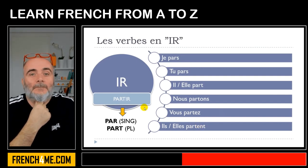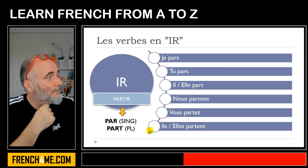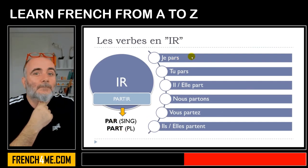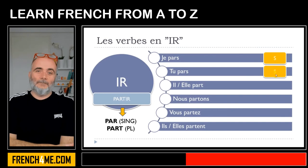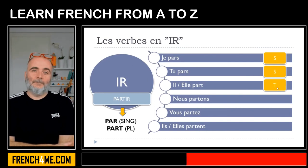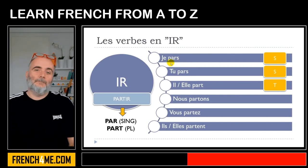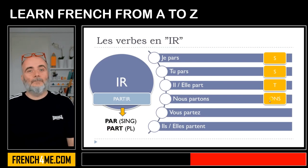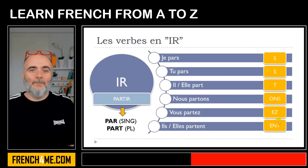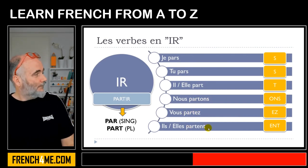This is the tricky thing with this verb partir — it's just to remember that when you get the singular or the plural, you will have different stems. For the singular: keep in mind you will have P-A-R, then add the ending S for je, S for tu, T for il/elle. Phonetically je pars, tu pars, il part, elle part — the same form. And for the plural, you keep P-A-R-T and add the endings: O-N-S for nous, E-Z for vous, E-N-T for ils/elles — giving nous partons, vous partez, ils partent, elles partent.